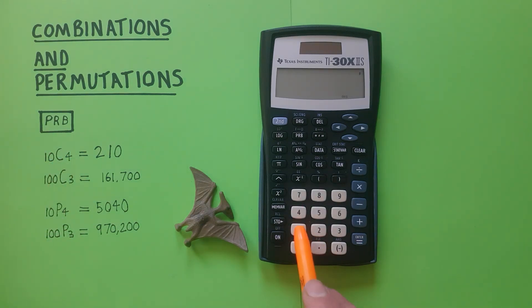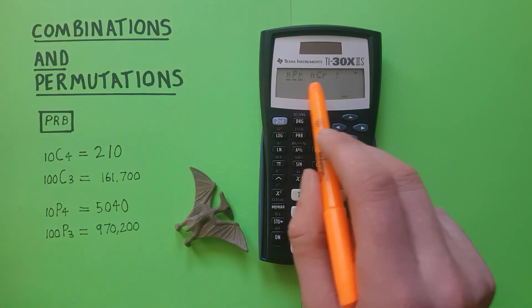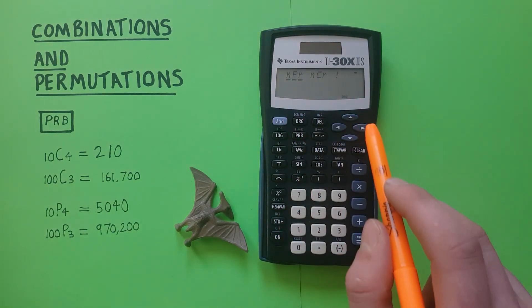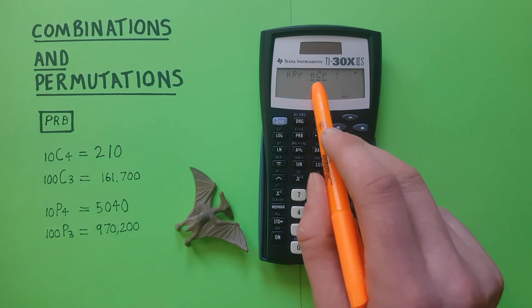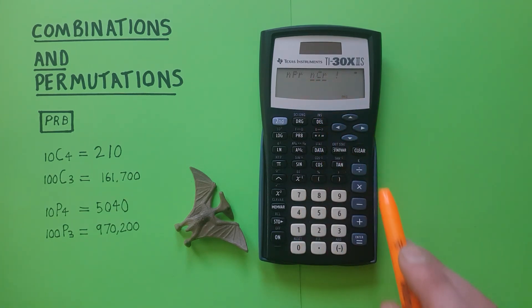To start we place the 10 on the screen and then press the PRB key. That brings up this menu and we want to go to the right once, select the NCR, press Enter.